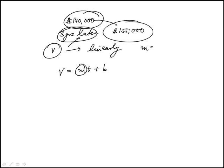So the slope would be this difference, $15,000 divided by the delta in time of three, so this would be $5,000.